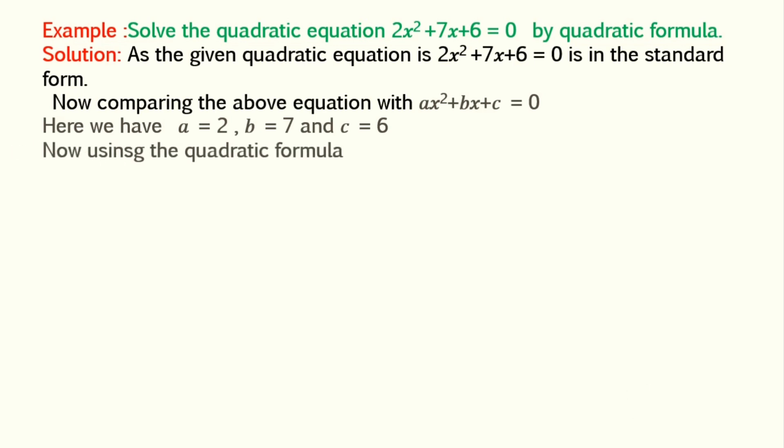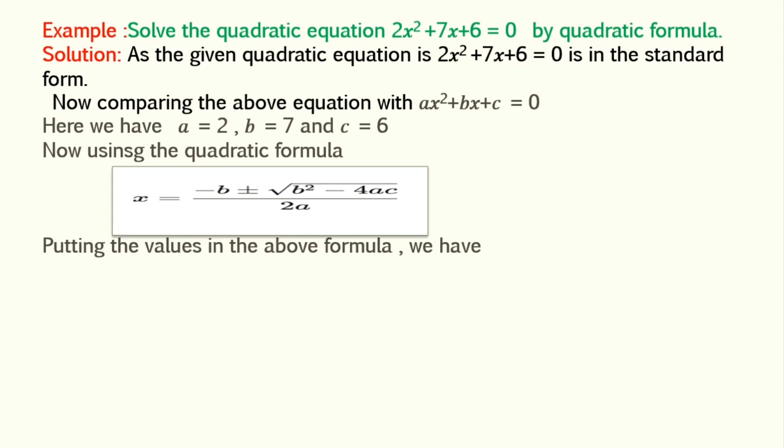Now using these values in the quadratic formula and simplifying them we get x is equal to minus b plus minus under radical sign 1 divided by 4. That is x is equal to minus 7 plus minus 1 divided by 4.